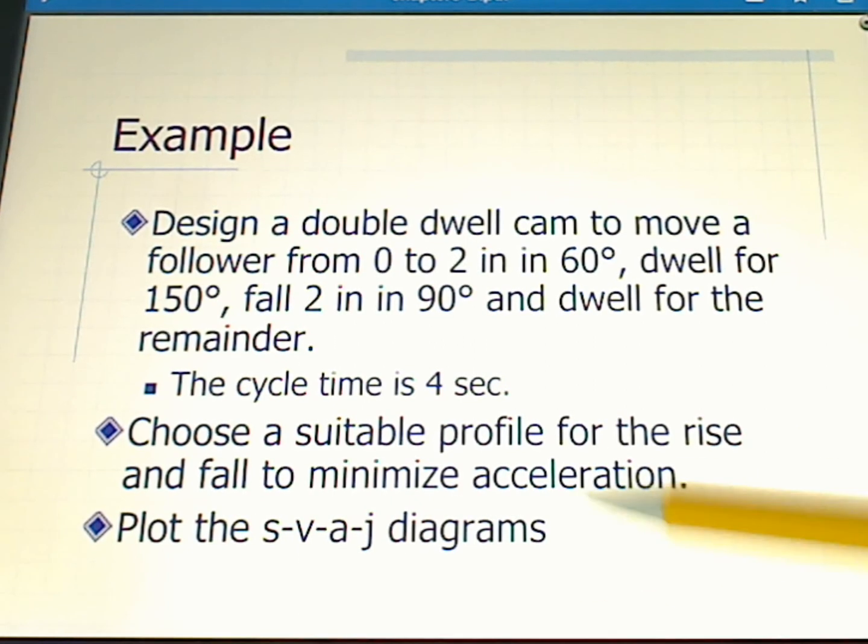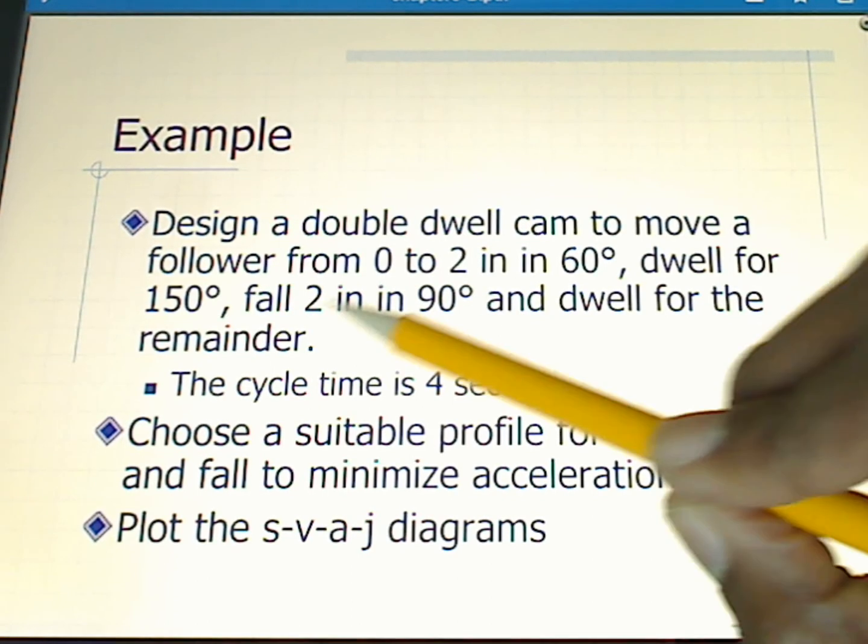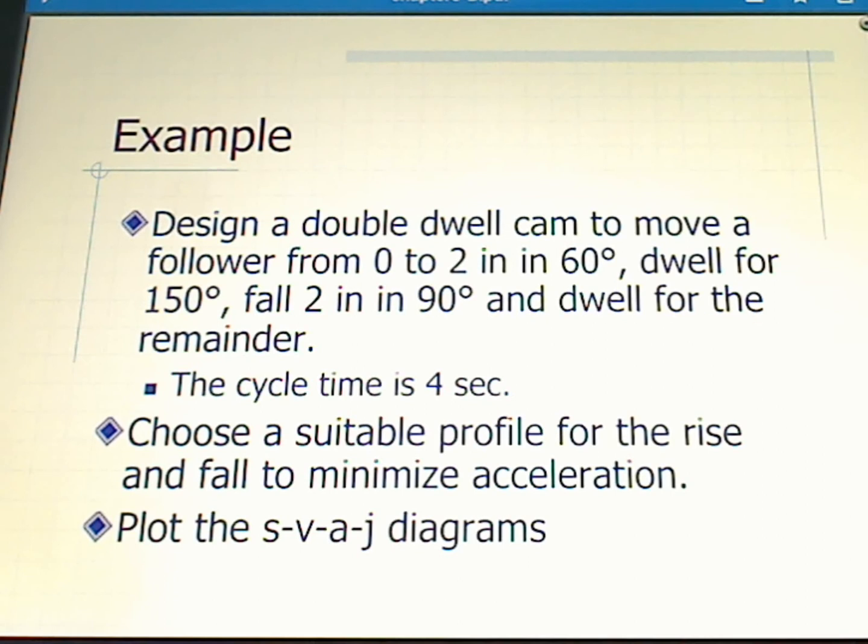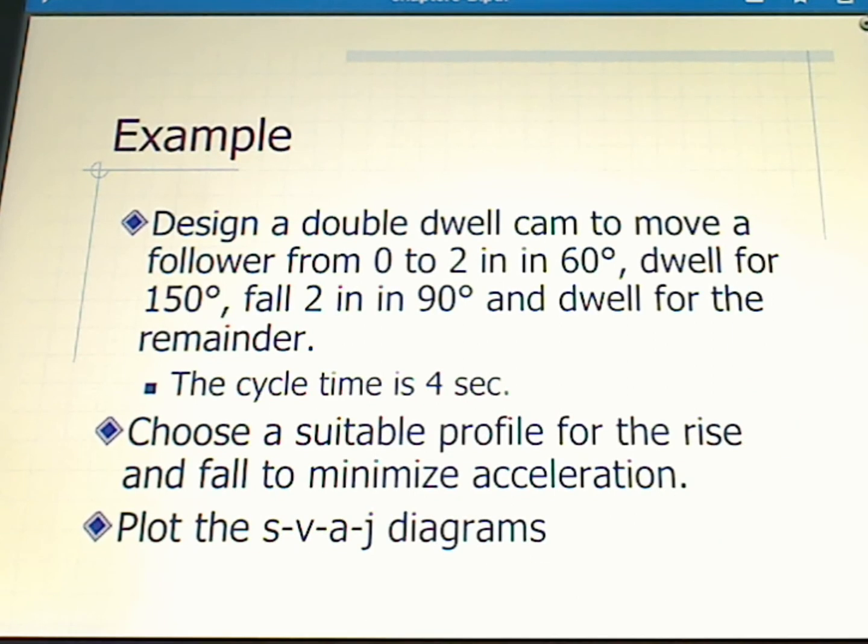Acceleration of what? This is going to be acceleration of our follower, that item that's moving from zero to two inches, then dwelling and falling and then dwelling again. We can think of the follower as the valve in an engine. And then finally, we're going to plot the SVAJ diagrams.